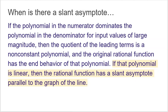The original rational function has the end behavior of that polynomial. If that polynomial is linear — meaning you divide the leading terms and get a linear polynomial — then the rational function has a slant asymptote that is parallel to the graph of that line. This doesn't tell you the exact slant asymptote equation, but the slant asymptote will be parallel to, and share the slope of, that resulting linear function.